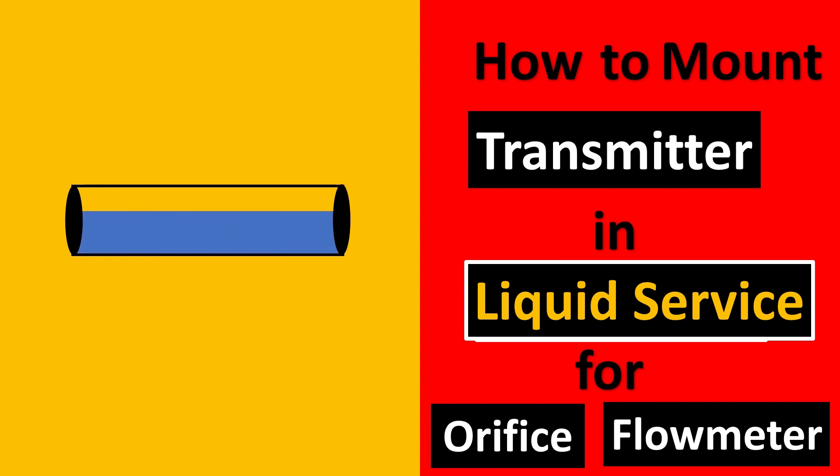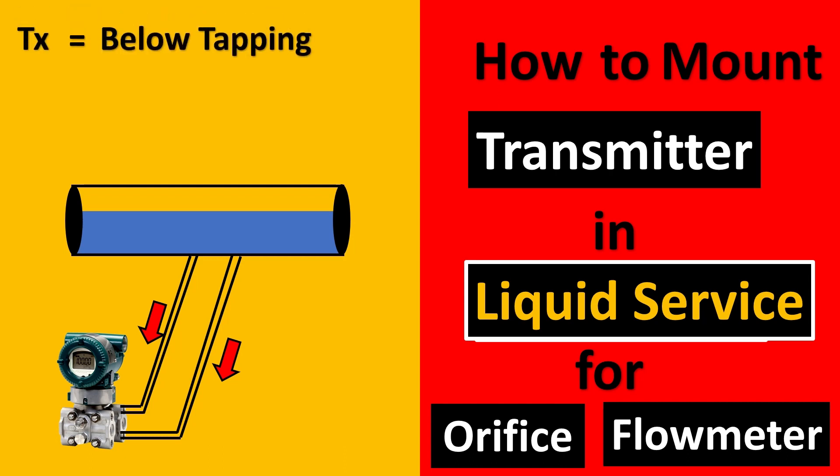Now the next question is what do you do in liquid services? In liquid services, the transmitter would be below the tapping and the slope. Remember that the slope will always be towards the transmitter and not towards the pipe.